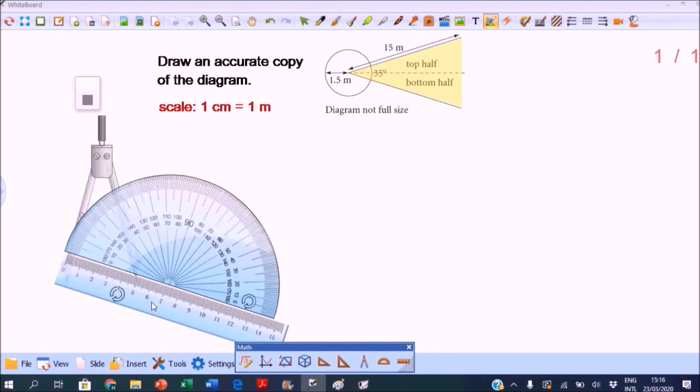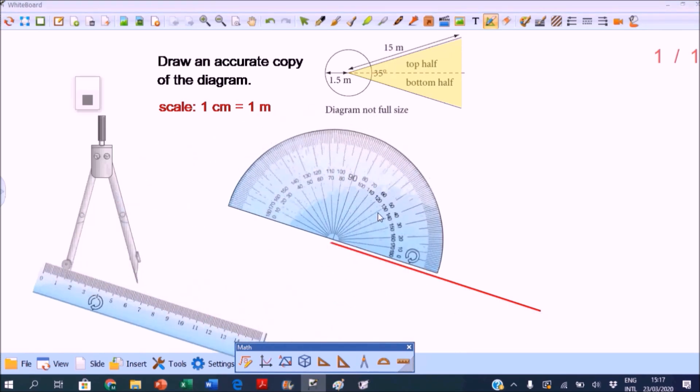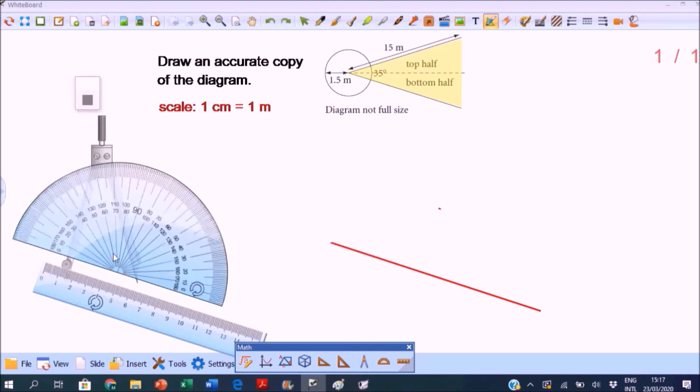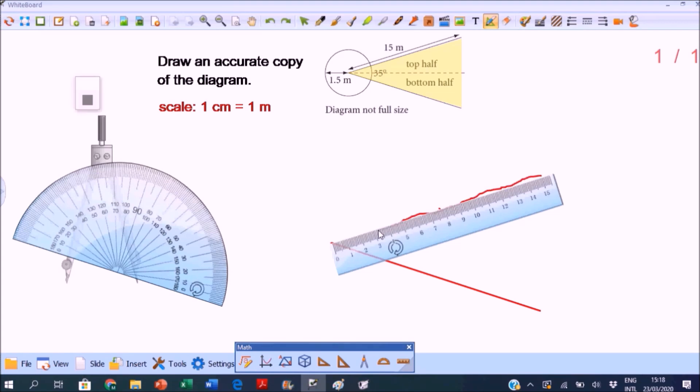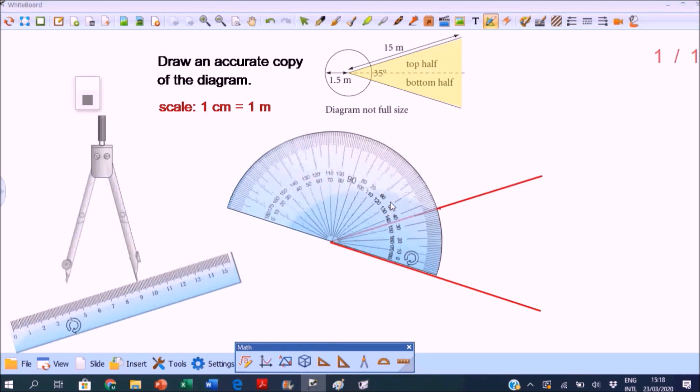You can start with a circle first then the lines, or draw the lines first and then the circle last. I find it easier to construct the lines first, so we will use the ruler, protractor, and compass. The lines are 15 meters, so that is 15 centimeters in our drawing. We can measure that with our ruler, then use the protractor to measure 35 degrees.